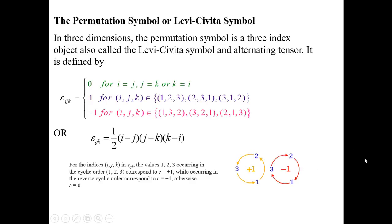In the last lesson, we studied about the Kronecker delta symbol. In this lesson, we will learn about the permutation symbol. The permutation symbol is also called the Levi-Civita symbol or alternating tensor. In three dimensions, the permutation symbol is a three-index object.